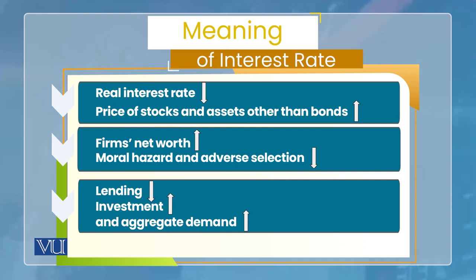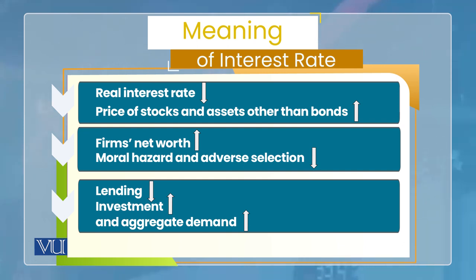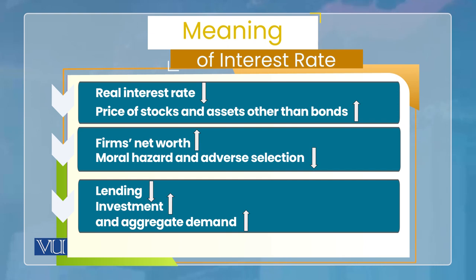Jab firms ki net worth increase ho jati hai, to lenders ke liye adverse selection ka problem kam ho jata hai, aur jo borrowers hain unki moral hazard ki tendency kam ho jati hai. Natiijah kya hoga? Lending zyada ho jati hai, usse investment zyada hoti hai, usse aggregate demand increase hoti hai. Toh har transmission channel ke andar ek intervening ya bridging variable aata hai — yahaan woh hai: net worth.